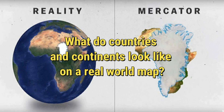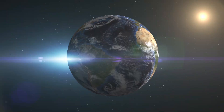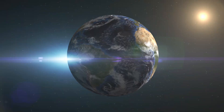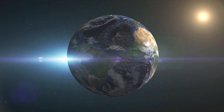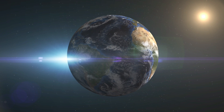On the Mercator map, Alaska looks as big as Brazil, but it's actually one-fifth the size of Brazil. Greenland also appears to be about 14 times larger than it actually is.